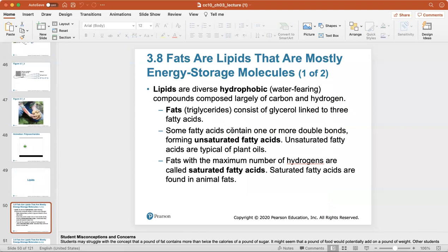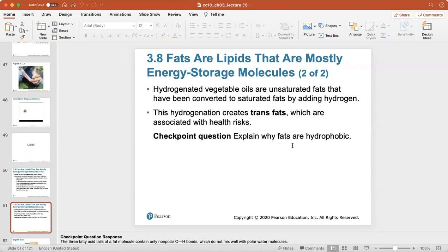Lipids then are diverse hydrophobic or water-fearing compounds composed largely of carbon and hydrogen. They're called hydrophobic because fats are unable to dissolve in water. You know that because you can't mix oil and water together, the oil will always float to the top. Fats, also known as triglycerides, consist of glycerol linked to three fatty acids. Some fatty acids contain one or more double bonds forming an unsaturated fatty acid. Unsaturated fatty acids are typical of plant oils. Fats with the maximum number of hydrogens are called saturated fatty acids, and saturated fatty acids are found in animal fats.